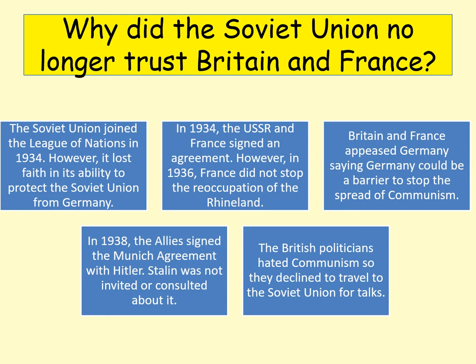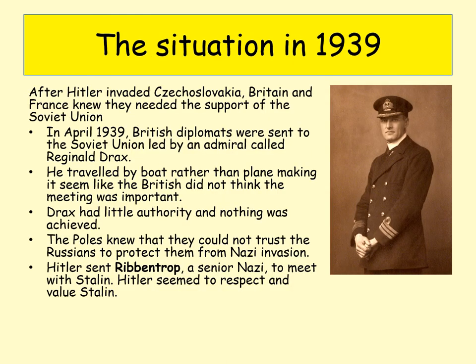The British had been very reluctant to travel to the Soviet Union for any peace talks. By April 1939, when Britain realised it needed allies, they made a mistake by sending Admiral Reginald Drax to the Soviet Union by boat rather than plane, suggesting they weren't taking the situation seriously. The talks didn't achieve anything, whereas Hitler had sent Ribbentrop, his foreign minister, for talks. Stalin needed to feel he was being treated as an important and powerful person, and the Nazis realised that and made sure Stalin felt valued — so they signed the pact together.